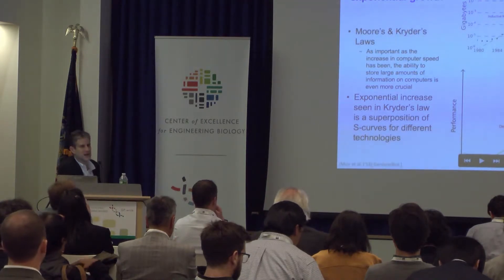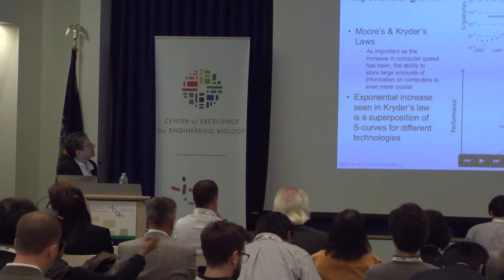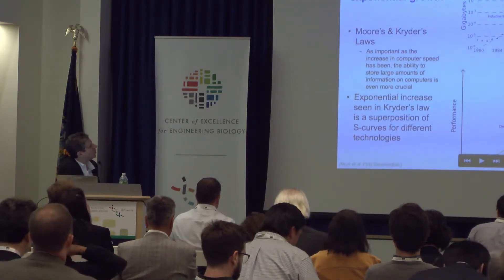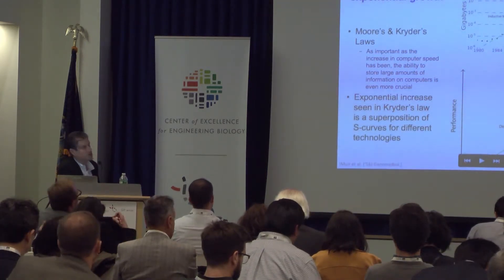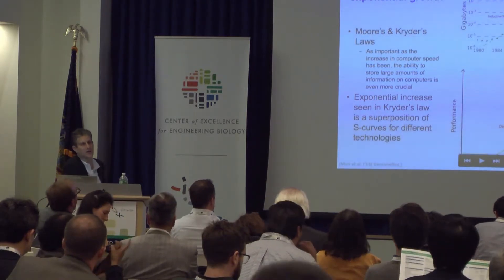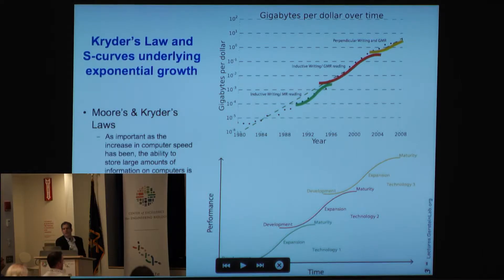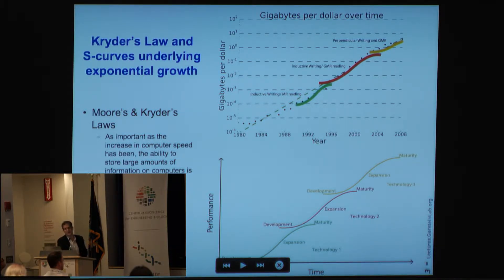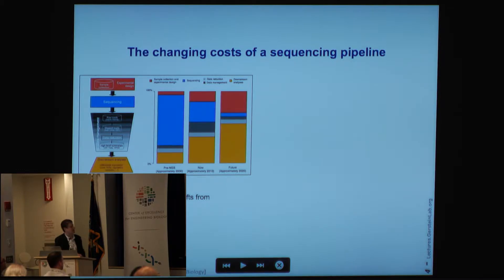Each S-curve describes a different technology that's developed, grows, and then phases out. For instance, for hard drives, we had different writing mechanisms during the 1990s. I would like to posit that the curve we saw for sequencing is really one of these S-curve-like phenomena, and that Kryder's Law governs what we see in the sequencing world.